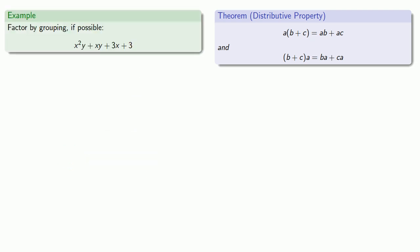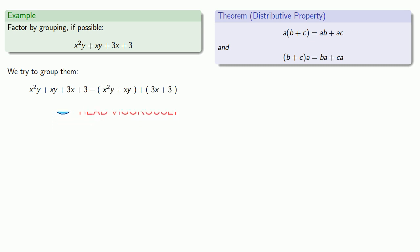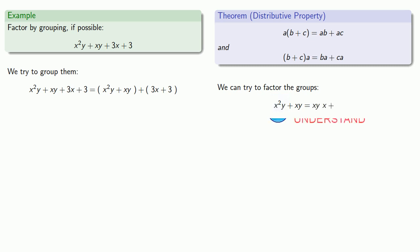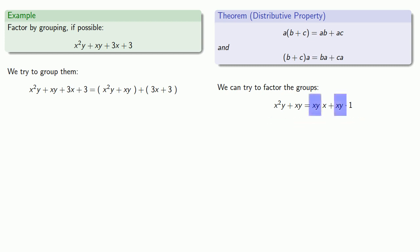How about an expression like this? We can try to group them — let's just try grouping the first two terms and the last two terms. The important thing is we can try to factor the groups. So let's look at this first set of terms: x squared y plus xy. We can read x squared y as xy times x, and xy as xy times 1. Both terms have a factor of xy, so we can remove it, leaving x plus 1.